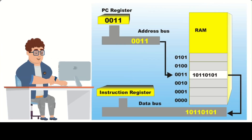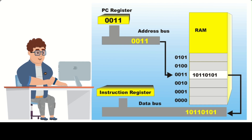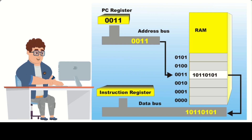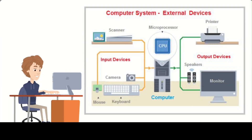When the processor needs to access a specific location in memory, it sends the binary address through the address bus. The address bus is then decoded by the memory controller, which determines the location of the data in memory and returns it to the processor. In addition to memory, the address bus can also be used to communicate with input-output devices.